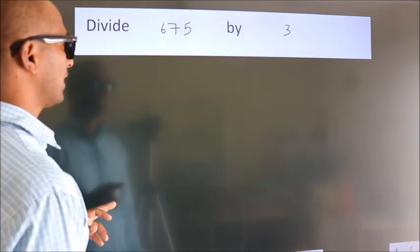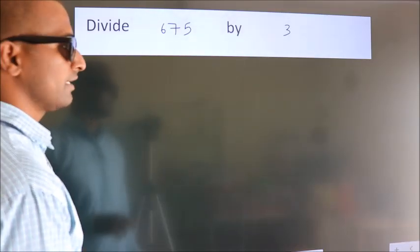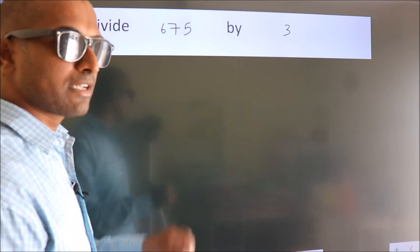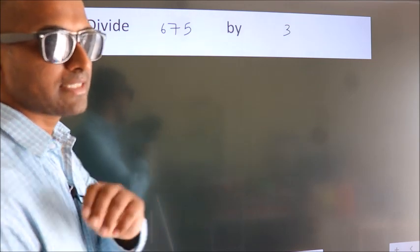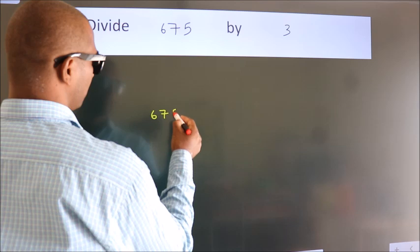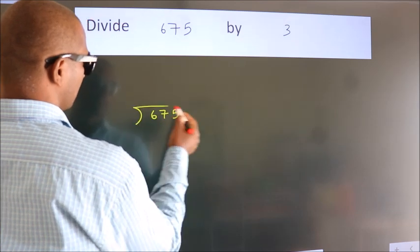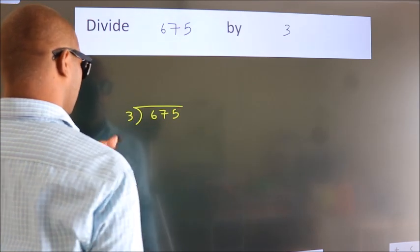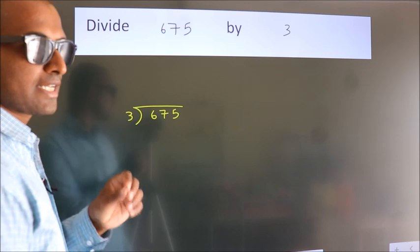Divide 675 by 3. To do this division, we should frame it in this way. 675 here, 3 here. This is your step 1.